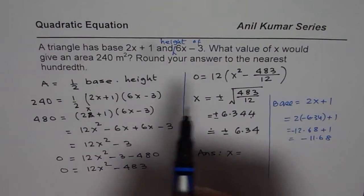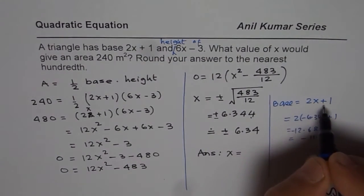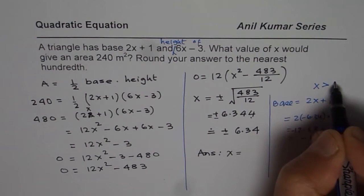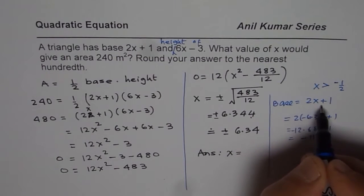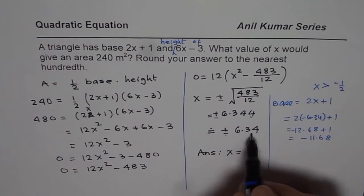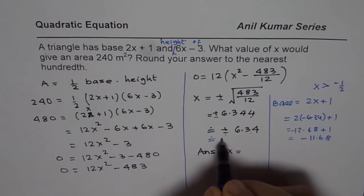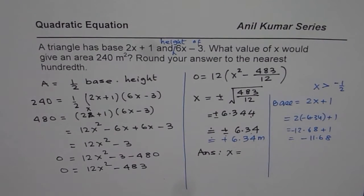Now, the dimensions cannot be negative. In fact, in this particular question, when we have base as 2x plus 1, x should be greater than minus half. Otherwise we will get a negative value. Therefore, the negative value is not valid and only possible value is plus 6.34 meters for x.